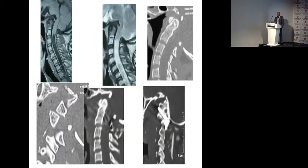Group B is where there is no atlantodental interval disturbance — we had previously recommended foramen magnum decompression for this group. But when we looked at the facets, the facet of C1 is behind the facet of C2 — a facet malalignment. I call this Type 2 facet malalignment, and these patients do not need foramen magnum decompression. They need atlantoaxial stabilization. There is no need to include the occipital bone in this construct.